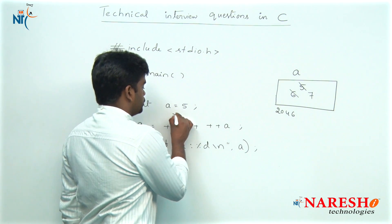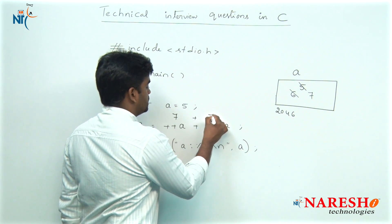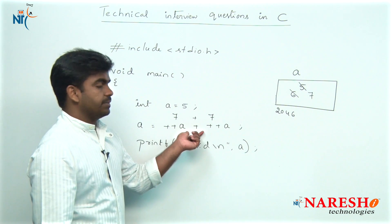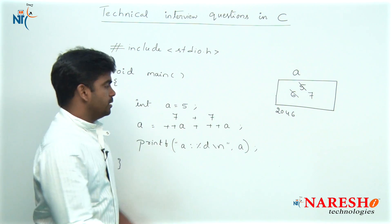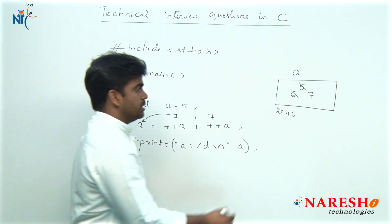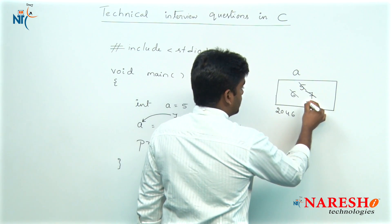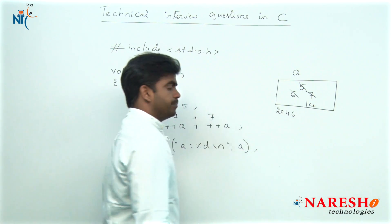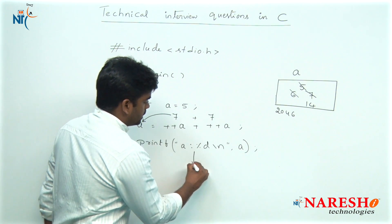Directly you should substitute 7 and 7 here. 7 plus 7, the value is 14. The 14 will be stored into a. Here the a value is 14, that 14 value will be printed.